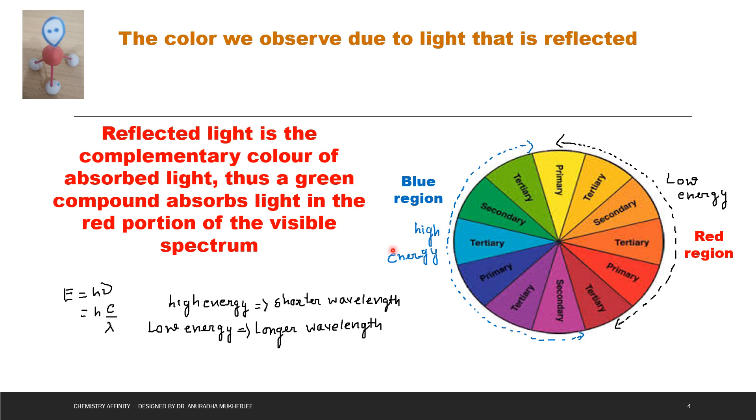Or if a molecule absorbs light blue region from this blue color, then reflected light will be orange color. Now let's explain this concept to the complexes.